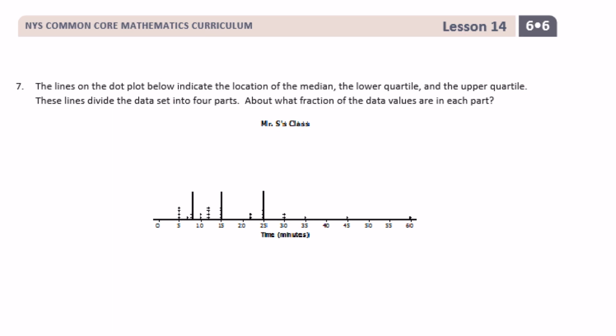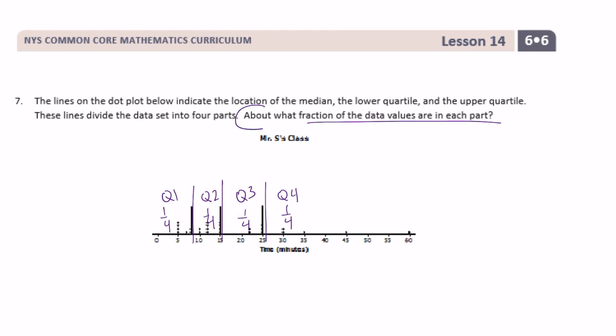Number seven, the lines on the dot plot below indicate the location of the median, the lower quartile, and the upper quartile. These lines divide the data set into four parts. About what fraction of the data values are in each part? So it's saying we have four parts. Quartile one, quartile two, quartile three, and quartile four. Four parts. So about what fraction of the data values are in each part. So it's divided into four parts. So they're each about a fourth of the data. Keyword being about. It's not exact. Now it's saying about what fraction the data values are in each part.